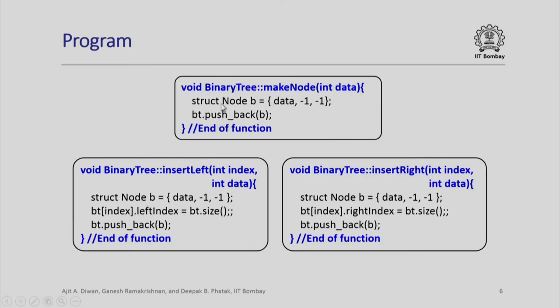Look at this binary tree make node function. Well, it is very simple. We use push back. Push back b will actually create a node with b which will have data and minus 1, minus 1 to represent both left and right indexes because there is no child at the moment.